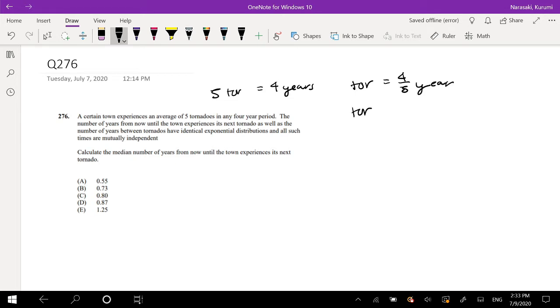Or one tornado every 0.8 years. The number of years from now until the town experiences the next tornado, as well as the number of years between tornadoes, have identical exponential distribution, and all such times are mutually independent.